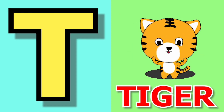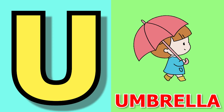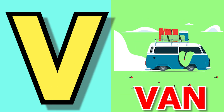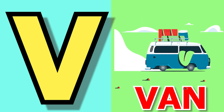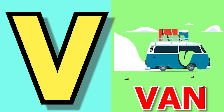T for tiger, tiger means bagh. U for umbrella, umbrella means chata. V for van, van means van.